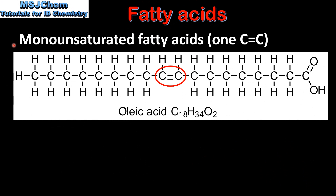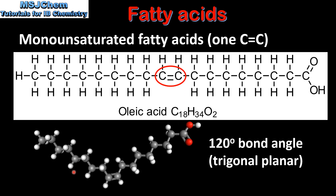Next we have monounsaturated fatty acids, which have one carbon to carbon double bond. This example is oleic acid — it has 18 carbon atoms and one carbon to carbon double bond. Here we can see a 3D model of oleic acid. The carbon to carbon double bond has a bond angle of 120 degrees, which is a trigonal planar arrangement.